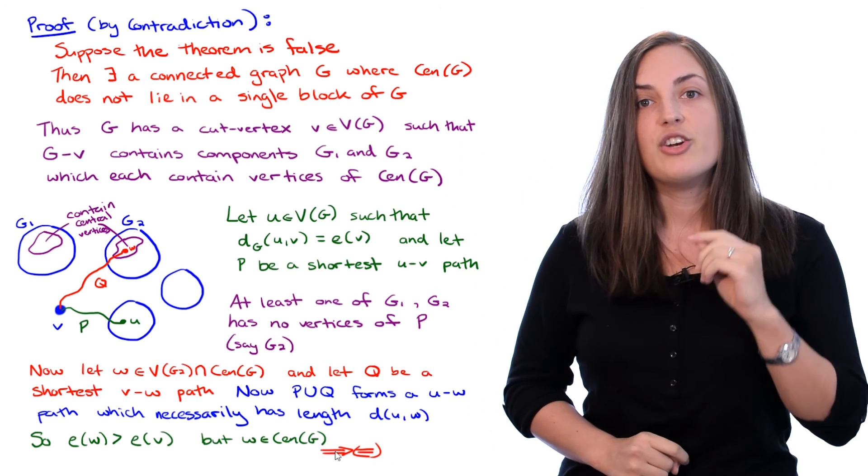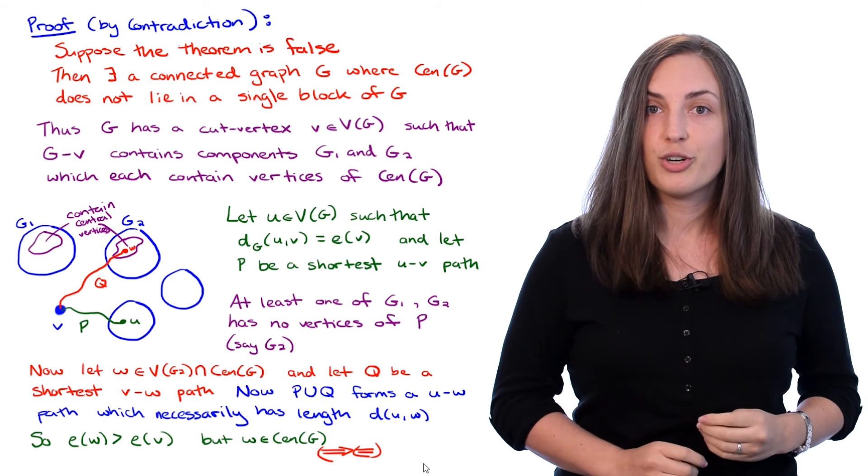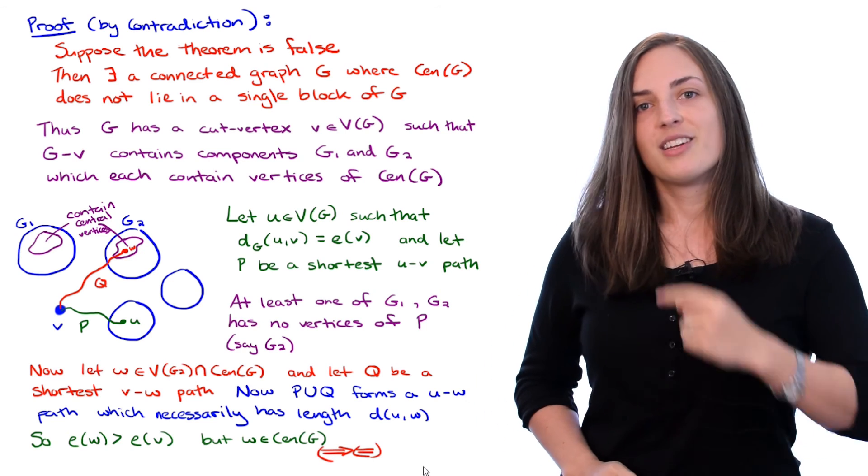With that contradiction we know that it's not true that our theorem is false. In fact it is true that the theorem holds. So we put the square and we're done the proof. So now you always know that the center of a connected graph belongs within a single block of that graph.